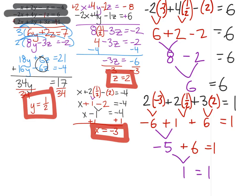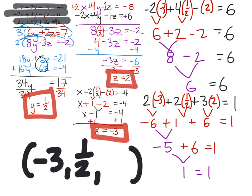Now we've used all three of the equations to verify that x is negative 3, y is one-half, and z is 2. Last thing you may need to do, just depends on your teacher, is to write this as a coordinate triple. So we're going to have negative 3, one-half, and 2. And that would be my final answer right there.